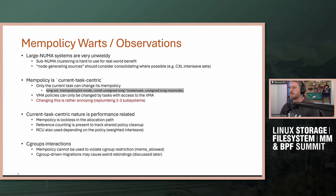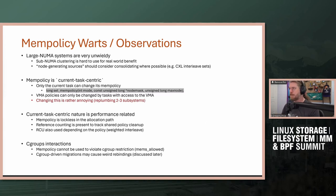An additional observation from the audience: in the mobile space, lower-powered cores manage the freeing of memory, meaning essentially all the memory they access is remote and slower. Greg agrees and says he would love more input from the mobile side.